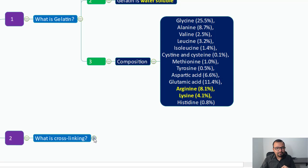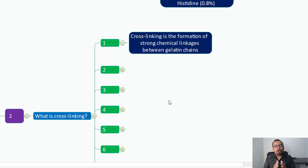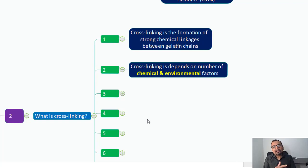So what is cross-linking? Let us begin our discussion on point number two. First, cross-linking is the formation of strong chemical linkages between gelatin chains. There are two different kinds of cross-linking possible. Cross-linking depends on the number of chemical and environmental factors. We will talk about what chemicals trigger the formation of cross-linking and what environmental conditions increase cross-linking formation. It is generally irreversible.